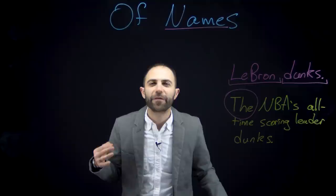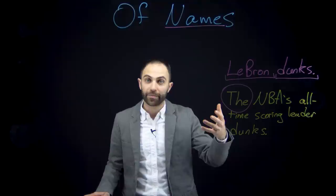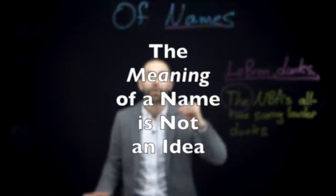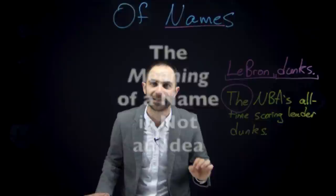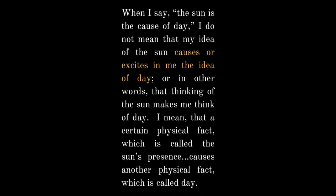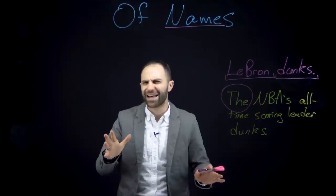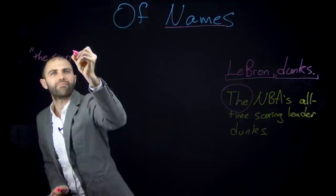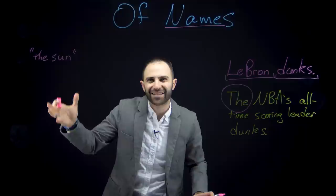The first important point Mill makes is that although the job of a name is to make an idea pop up in our minds, the meaning of a name is not an idea. When I say 'the sun is the cause of the day,' I do not mean that my idea of the sun causes the idea of day — that thinking of the sun makes me think of day. There are three things involved: the word or name 'the sun,' which is a bit of language made out of ink.